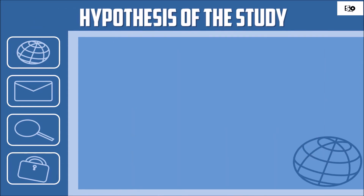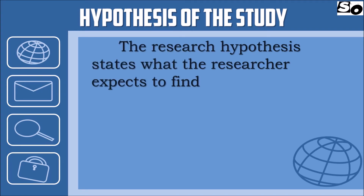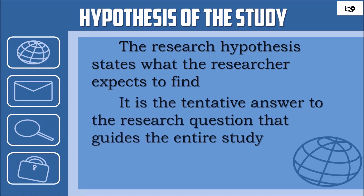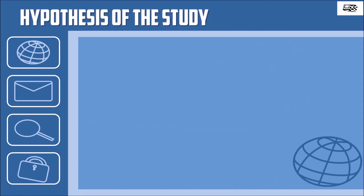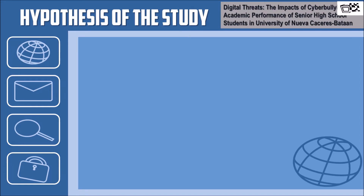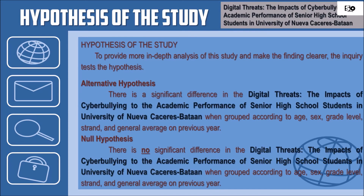Hypothesis of the Study. The research hypothesis states what the researcher expects to find. It is the tentative answer to the research questions that guides the entire study. The hypothesis has two types: the null hypothesis and the alternative hypothesis. The null hypothesis proposes that there is no difference between certain characteristics of the population, while the alternative hypothesis is just an alternative to the null hypothesis. Here is an example using the research title Digital Threats: The Impact of Cyberbullying to the Academic Performance of Senior High School Students in the University of Nueva Caseras, Bataan — showing both an alternative hypothesis and a null hypothesis.